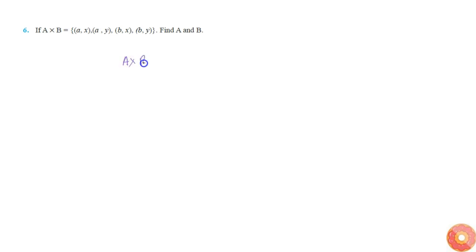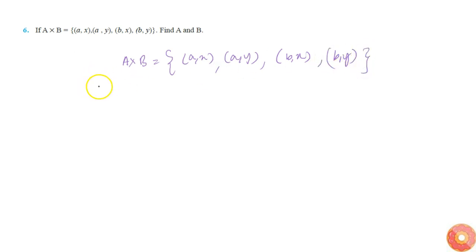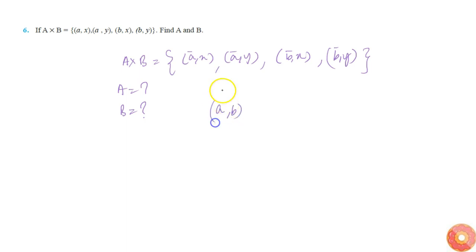In this question, we are given A cross B is equal to the set of (a, x), (a, y), (b, x), (b, y), and we are asked to find what A and B are. One thing we can observe is that all the first elements belong to set A — we see two elements: a and b. All the second elements belong to set B, so they are x and y.